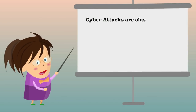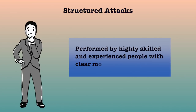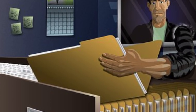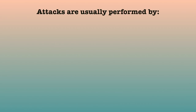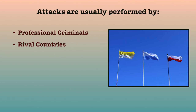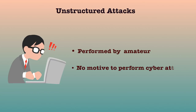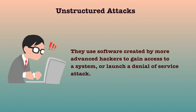Cyber attacks can also be classified as structured and unstructured attacks based on the level of maturity of the attackers. Structured attacks are performed by highly skilled and experienced people with clear motives. They have access to sophisticated tools and technologies to gain access to networks without being noticed by intrusion detection systems. They can also develop or modify existing tools to satisfy their purpose. These attacks are usually performed by professional criminals, rival countries, politicians, terrorists, and rival companies. Unstructured attacks are generally performed by amateurs who try to test a tool readily available over the internet on a random company's network.